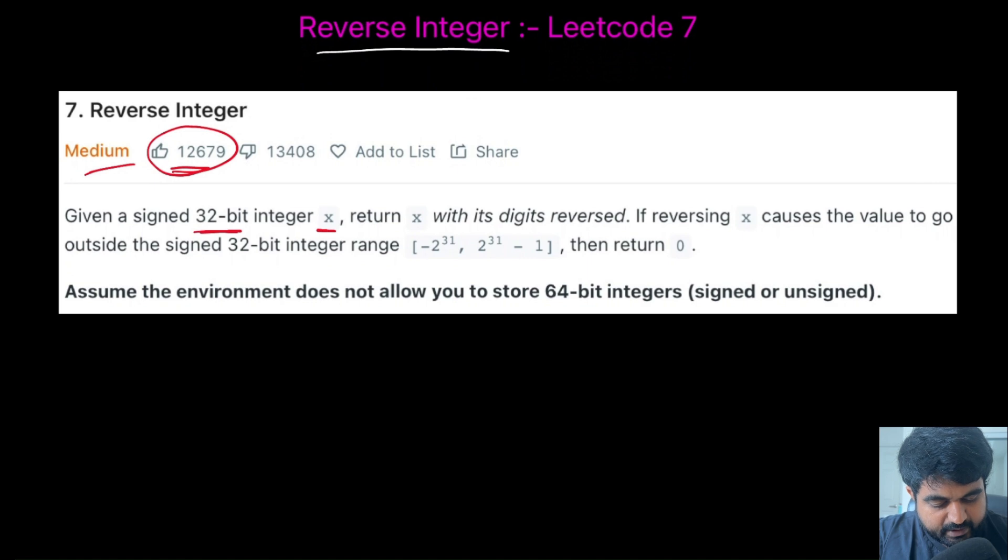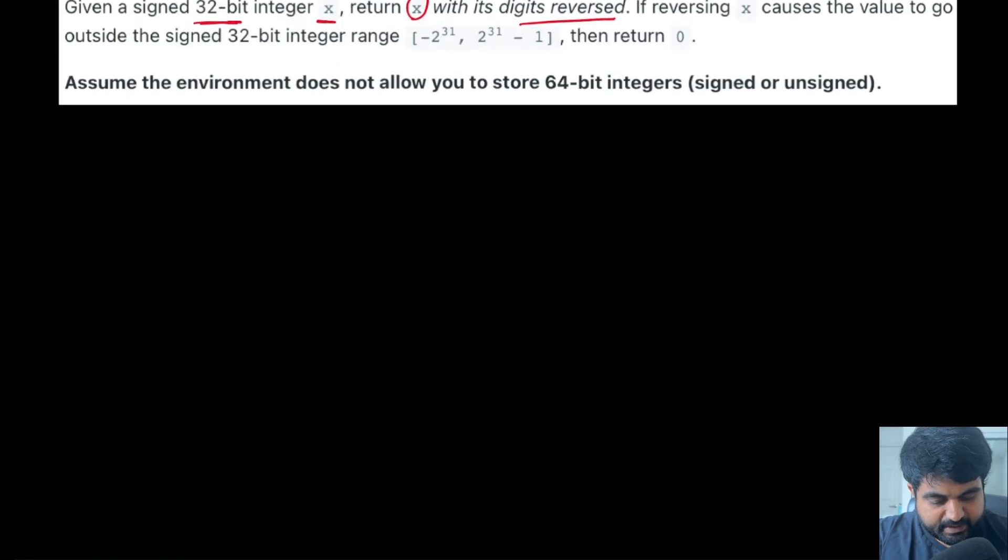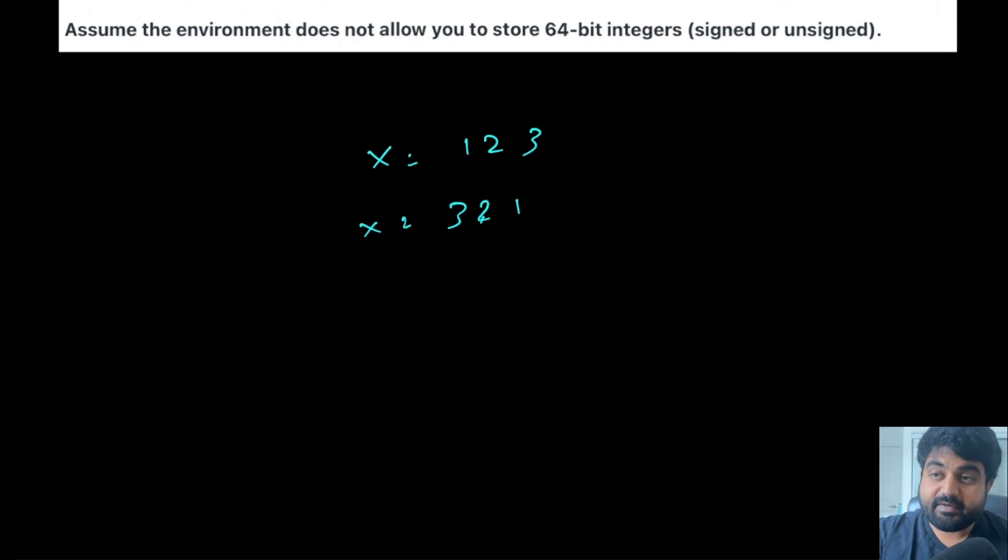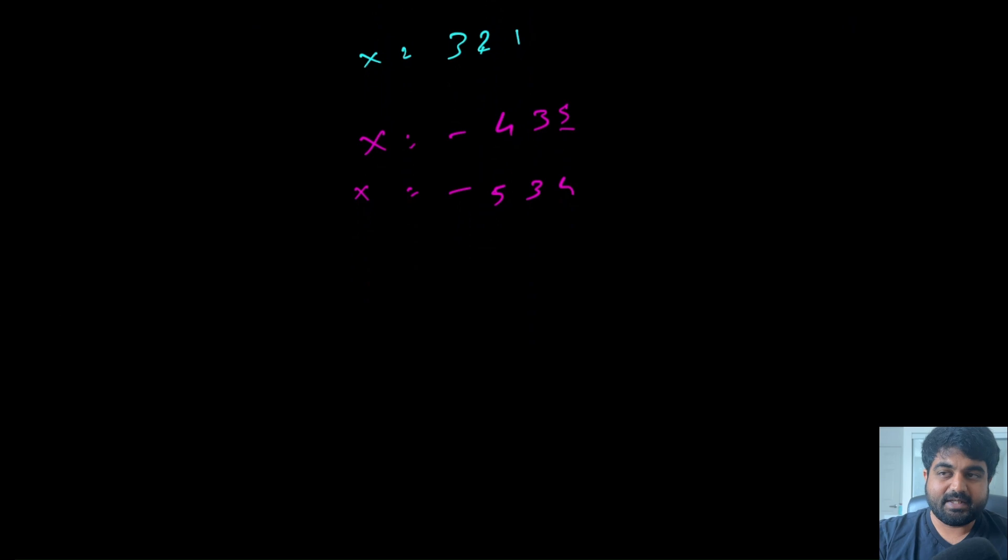We need to return x with its digits reversed. So basically, if the given x value is 123, then we need to return x equal to 321. Same way, if we are given a negative number, let's say x is equal to minus 435, then once again we need to return as minus 534 and so on and so forth.